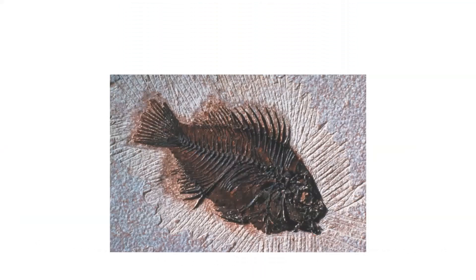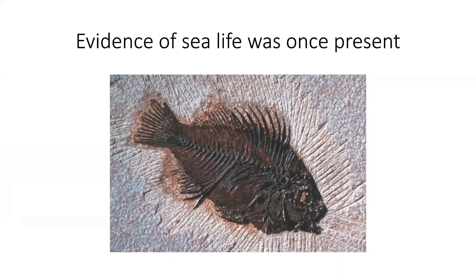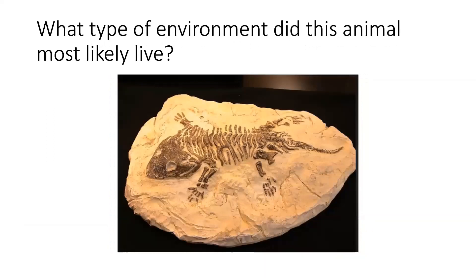What type of environment did this animal once live in? If you said that this was evidence of sea life, then you are correct. This is an imprint of a fish, and I'm assuming millions of years ago, fish still lived in the ocean. What type of environment did this animal most likely live in? If you said on land, I think you're absolutely correct. This little guy has four legs and a tail and I don't see any fins or any evidence that he lived in the ocean. So I'm assuming this might have been maybe a lizard of some sort, and yes, he lived on land.